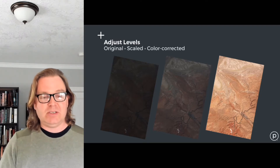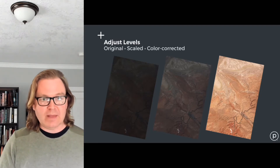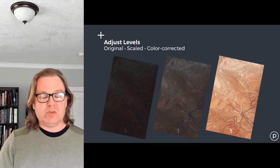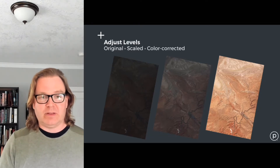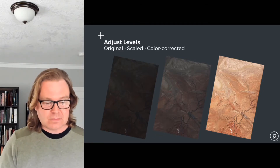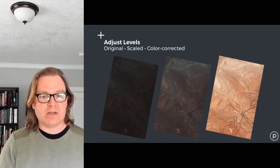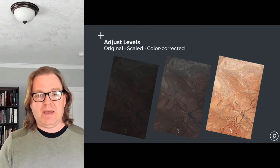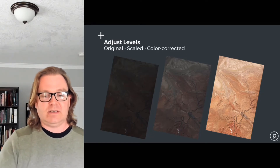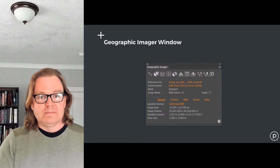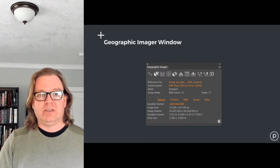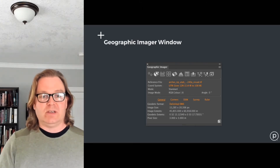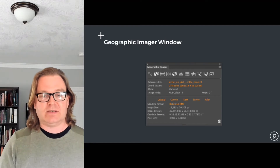It will automatically mosaic the files and keep all georeferencing intact. Because it's a scientific dataset, the data will be very dark, so the first thing I usually do is change the levels from 0 to 127 — doubling the brightness — just to get a sense of what I'm looking at, then go on to do a full color correction. Once that's imported, take a look at the Geographic Imager window. It has helpful information like image extents and resolution, and it's a good reality check to make sure georeferencing has arrived intact with your dataset.